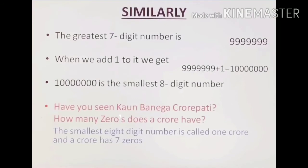Similarly, the greatest seven digit number is 99,99,999. When we add one to it, we get one crore. One crore is the smallest eight digit number. One crore has seven zeros, and it is the smallest eight digit number.